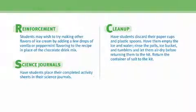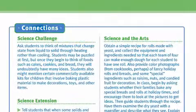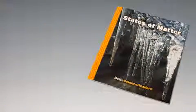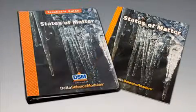To conclude the activity, collect the boxes and rulers and return the blocks to the kit. For science background, reinforcement activities, curriculum connections, and information about the Delta Science Reader, please consult your DSM Teacher's Guide.